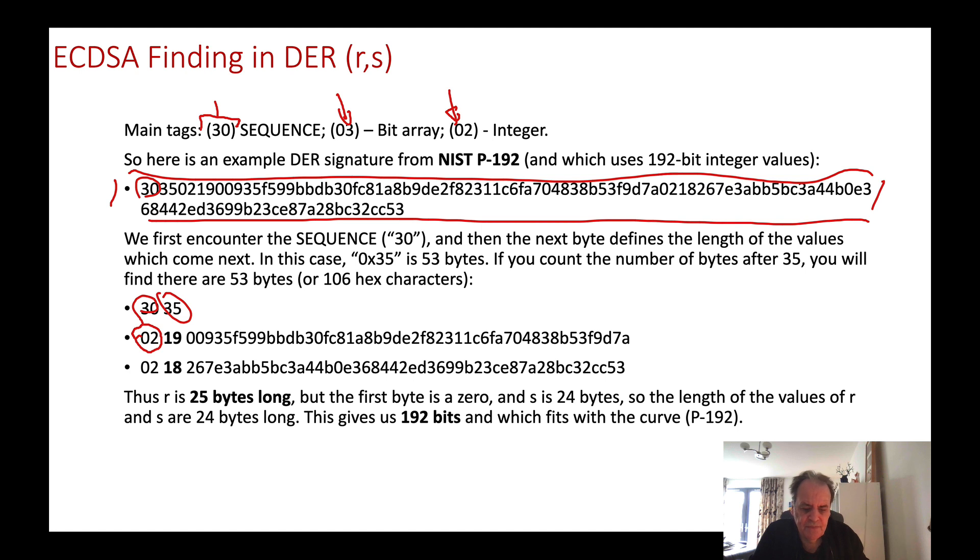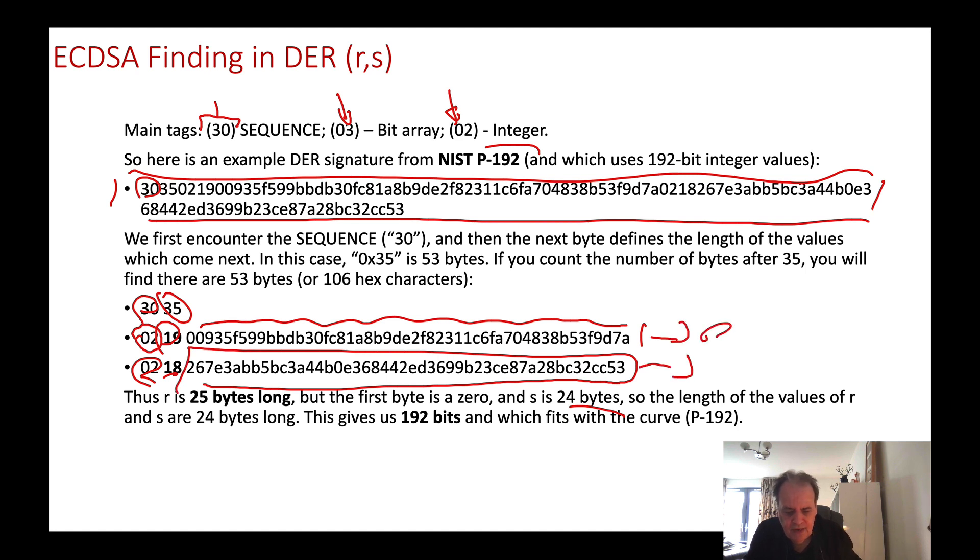The next value after the length is the tag identifier for the type. In this case it's 02, which is an integer. Then we identify there are 19 bytes that follow. Remember, it's 19 hexadecimal, so 19 hex is 25 in decimal, meaning there are 25 bytes after that. Then after 25 bytes we get 02 and 18. 18 hex is 24. So this value is the S value and this value is the R value.